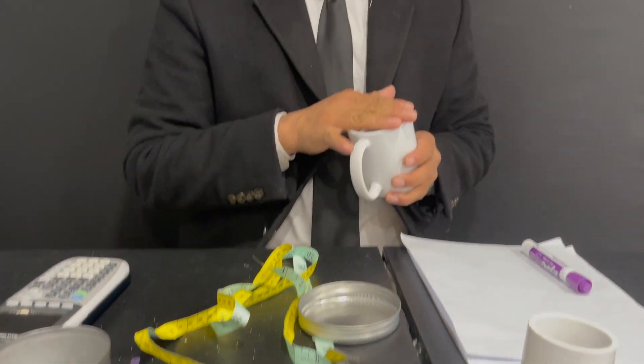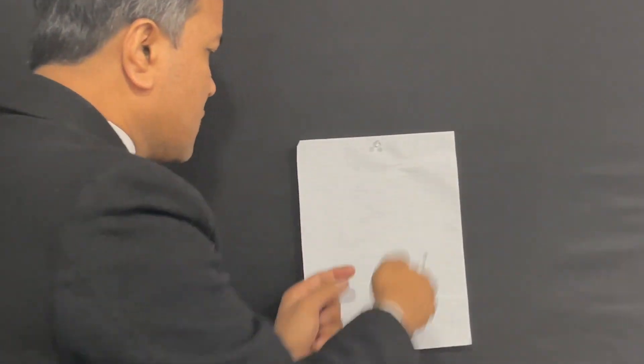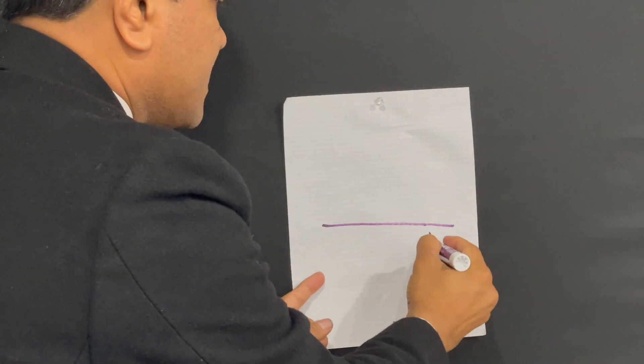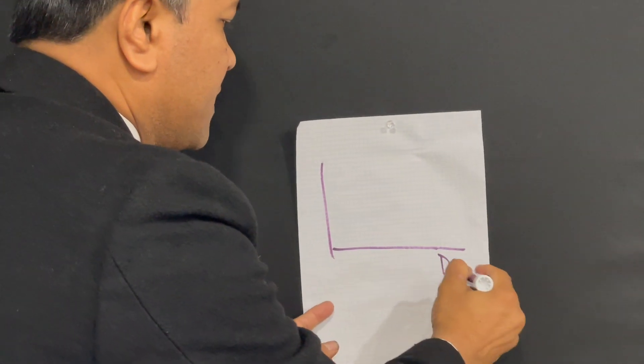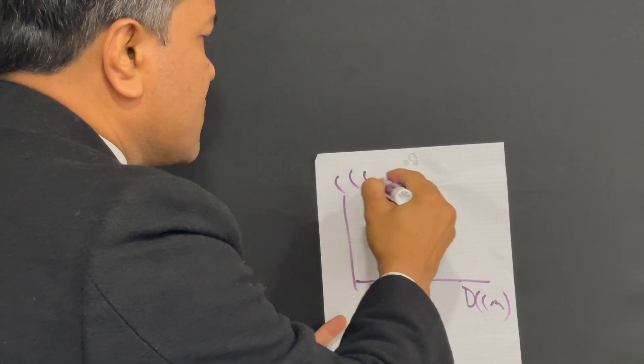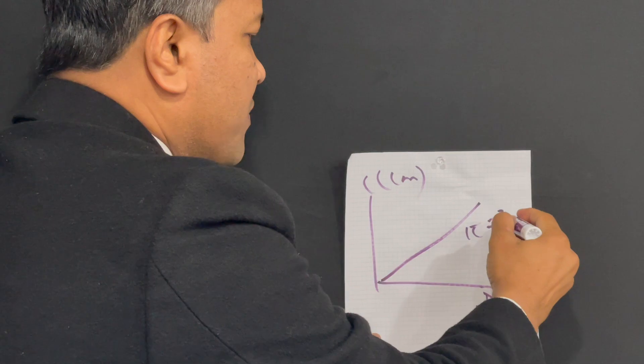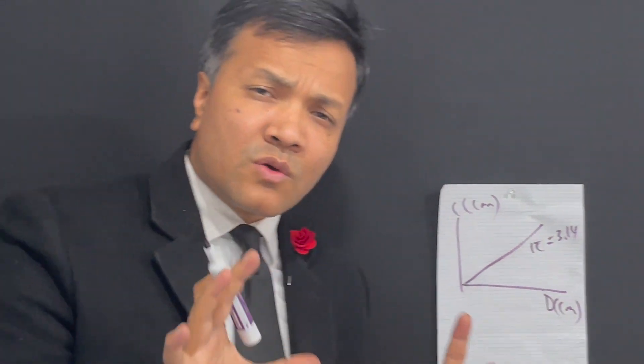They have the diameter and they have the circumference. I'm going to measure the diameter and circumference of course. And the diameter would be x-axis. Diameter would be x-axis which is in centimeter and circumference would be y-axis which is also in centimeter and the slope would be pi or 3.14 or at least close to 3.14.